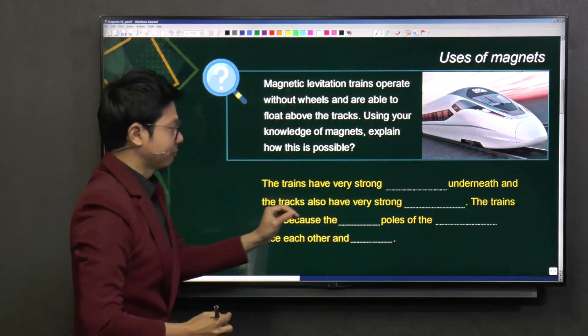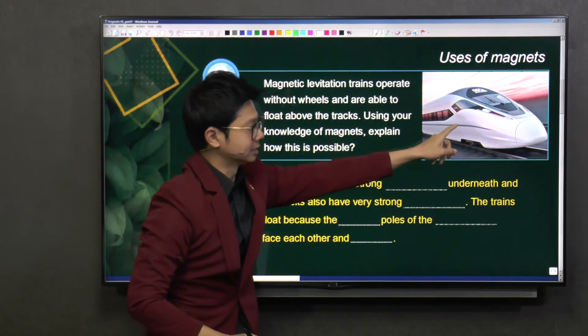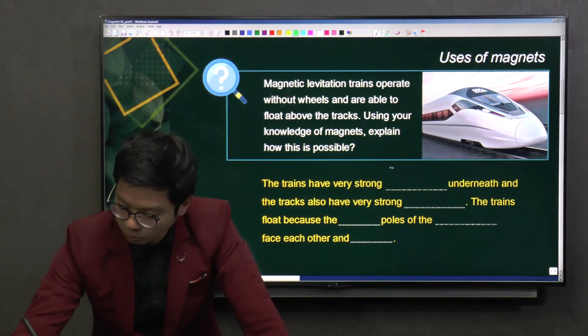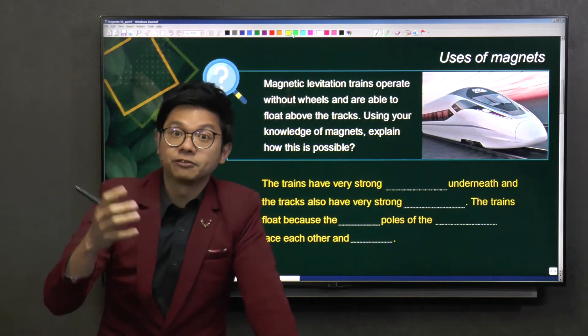So what exactly makes it possible? This is the track. This is the train. So how to levitate it? The theory is actually very straightforward.